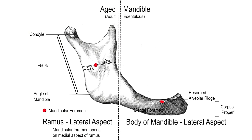In the case of edentulousness, after the resultant resorption of the alveolar bone, the mental foramen will now be located close to the superior margin of the resorbed alveolar ridge, which is where our injection point will now be.